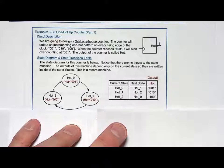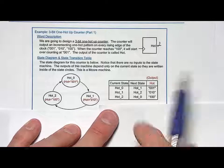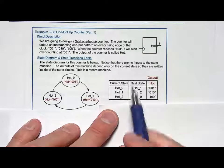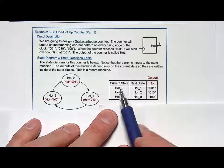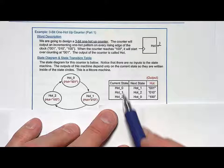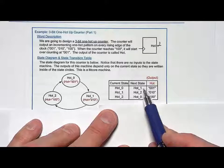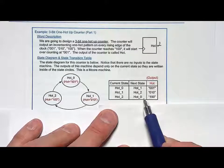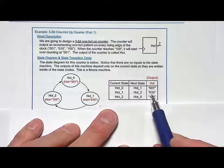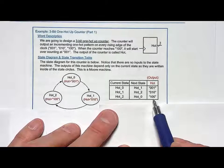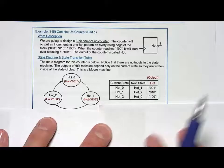If I look at the state transition table, it's pretty simple. I just list current state, next state, and the output. I go hot0, hot1, hot2 for the current states, put in the next states, and the outputs are 001, 010, 100 respectively. So pretty simple.